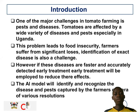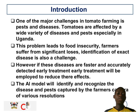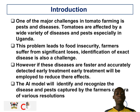In Uganda, one of the major challenges to tomato farmers is pest and disease. The tomatoes are affected by a variety of pests and diseases. This problem leads to food insecurity and significant losses, such as failure to get a good harvest.